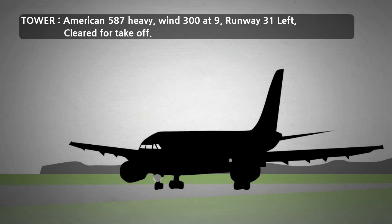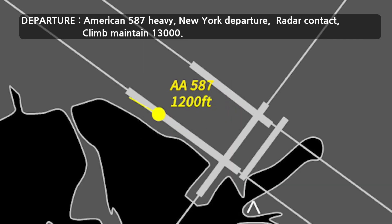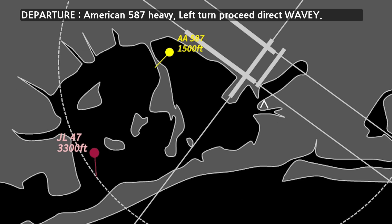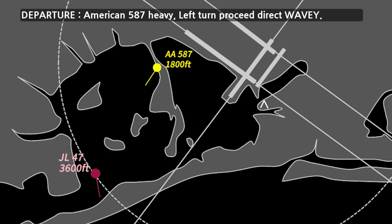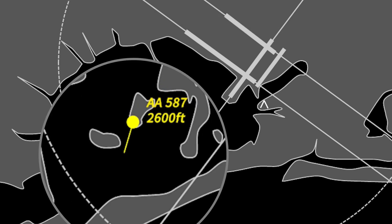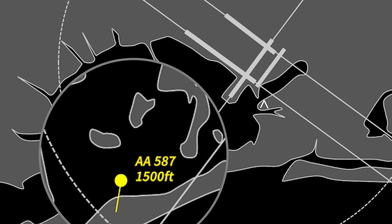The tower controller issued takeoff clearance to American Airlines 587. The aircraft was climbing at 1,700 feet when the departure controller instructed a left turn direct to Wavy, and the response from American Airlines 587 was the last communication. The aircraft crashed in the residential area of Queens, New York, and all passengers died. What really happened three minutes after takeoff?